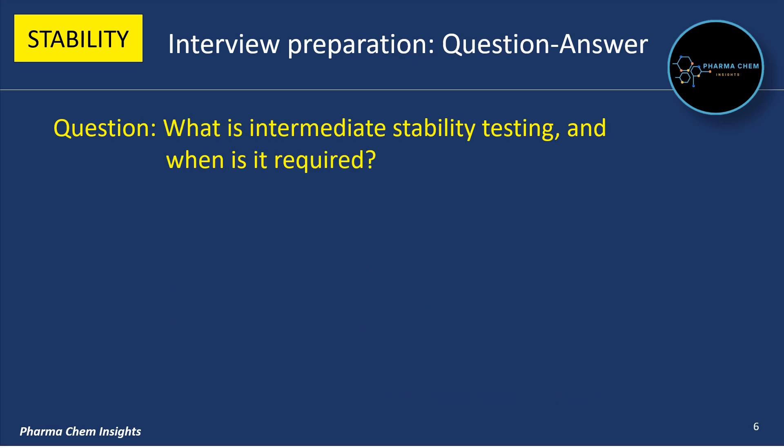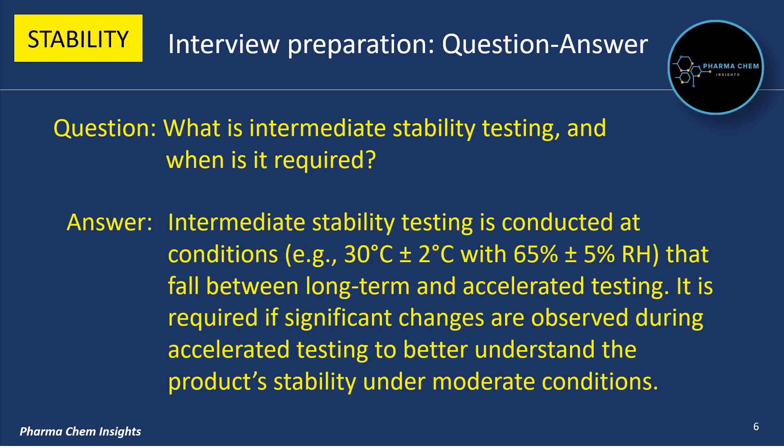Next question: What is intermediate stability testing and when is it required? Intermediate stability testing is conducted at conditions e.g. 30°C ±2°C with 65% ±5% humidity, falling between long-term and accelerated testing. It is required if significant changes are observed during accelerated testing, to better understand product stability under moderate conditions.